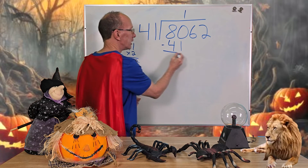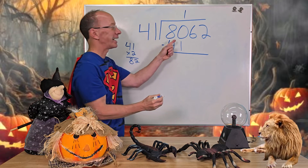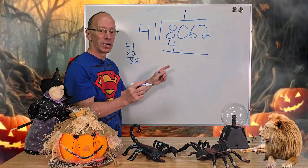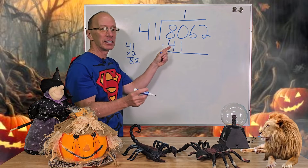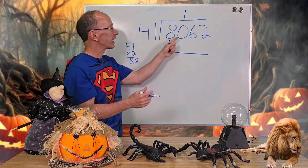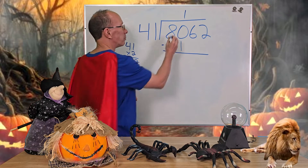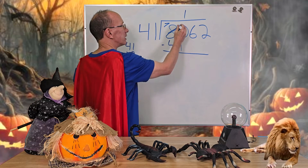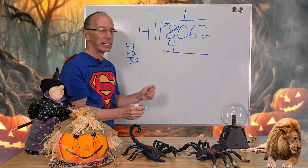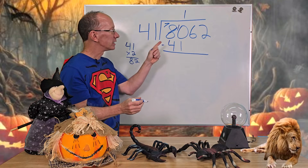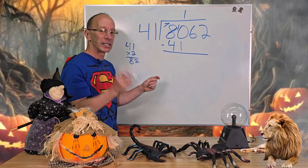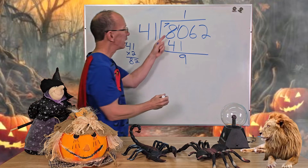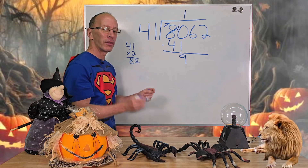I'm going to go ahead and subtract — I have to borrow. 0 minus 1 is not going to work. It's like I have 0 cookies and you want to take 1 away. I need to make this number bigger. So I borrow 1 from the 8, and that will be a 7, and then this turns into 10. Now I can subtract: 10 minus 1 equals 9. Then I go over here and 7 minus 4 is 3.